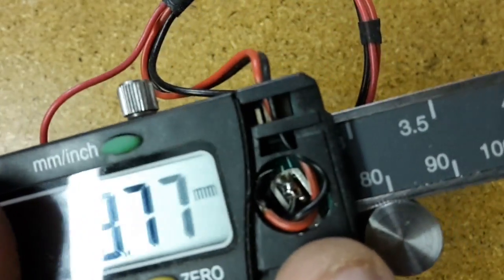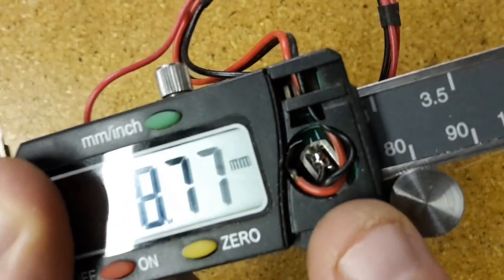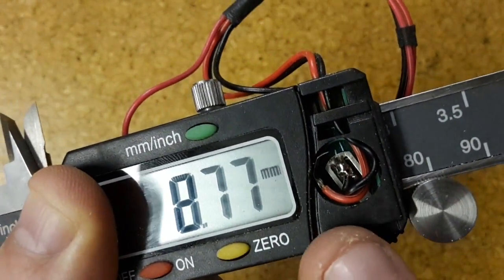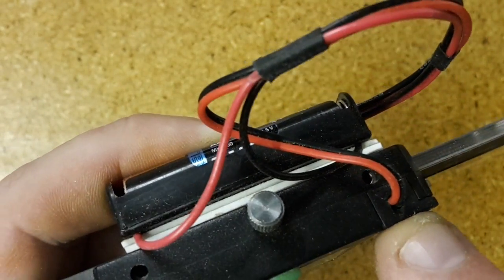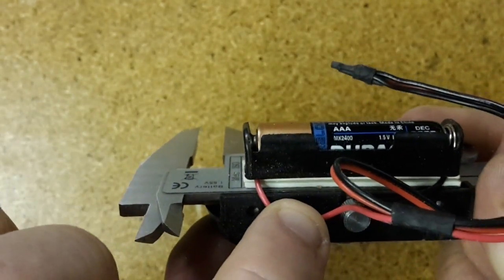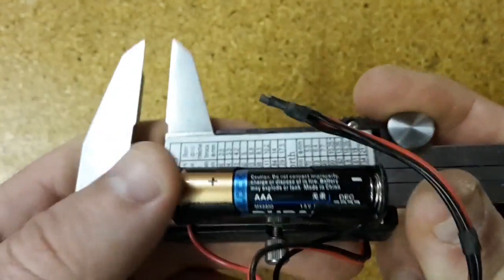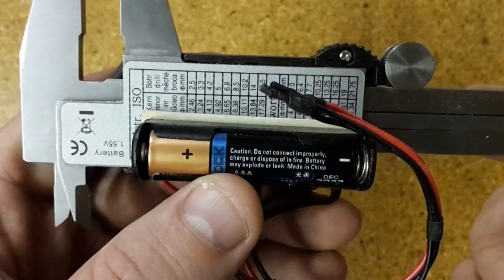In here I've just soldered the two wires to where the battery would normally be, drilled a little hole out the back, and with some double-sided tape I've stuck this battery on the back.